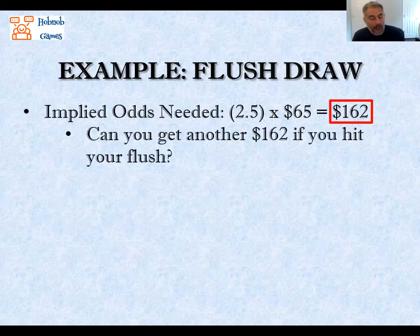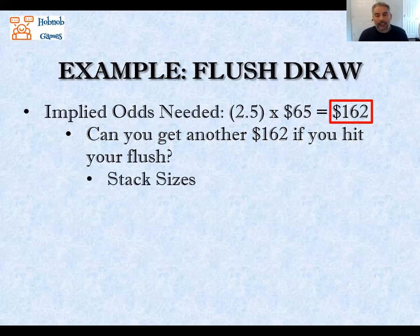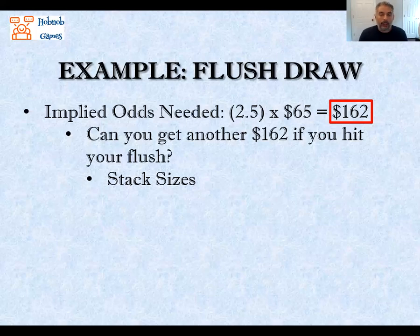The key question you have to ask yourself is: can you get another $162 on the turn and/or river if you hit your flush? This is where it becomes more art than science, because you need to know your opponents well. One of the first things to consider is stack sizes — is there physically enough money in the stacks to get another $162? If you only have $100 left in your stack after calling and your opponent also only has $100 left, then you must fold — it's physically impossible to make up that $162.